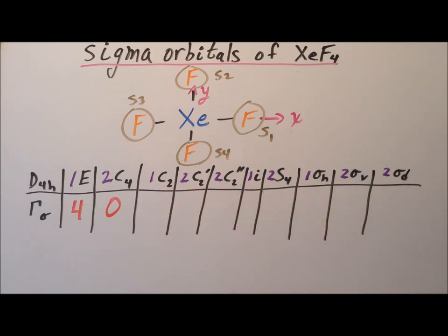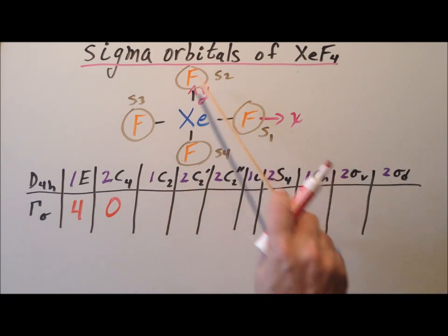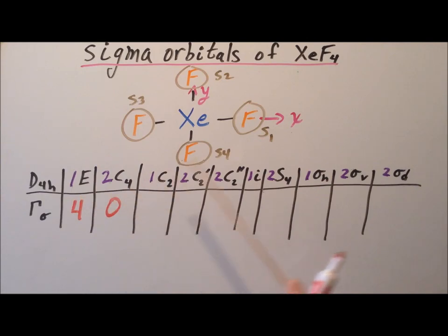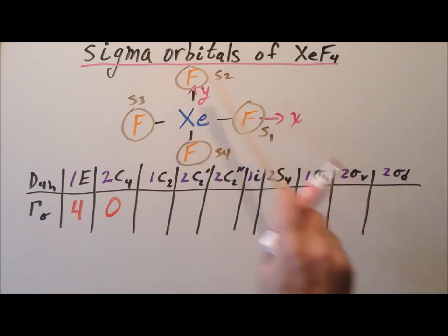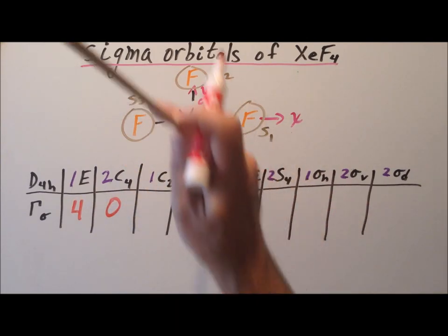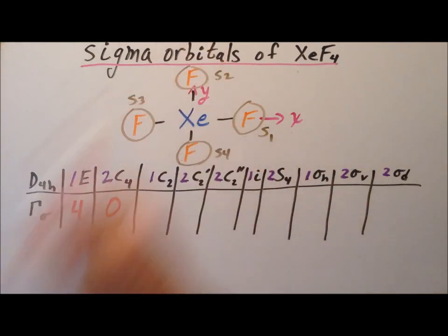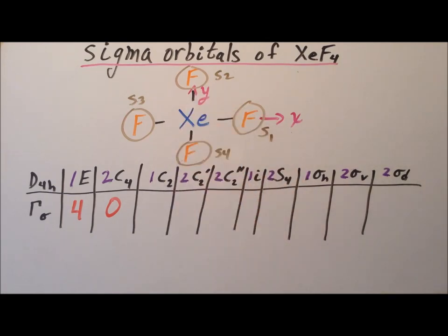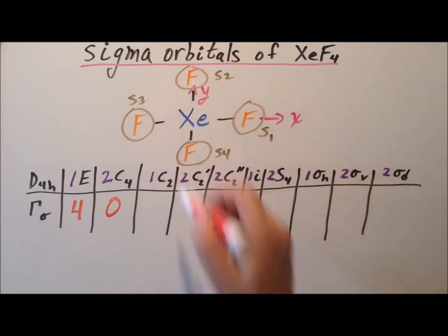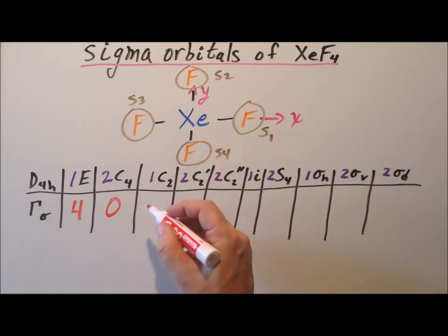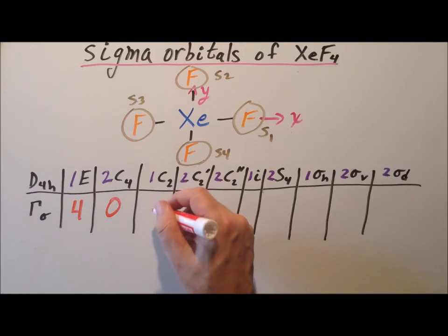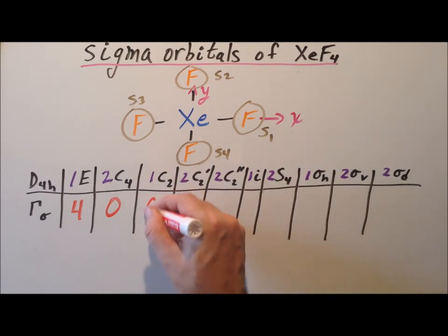The C2 here is applying C4 twice, so it's a C2 operation around the Z axis. Again, all of the sigma orbitals are going to move position, so that's going to be zero — none stays put.